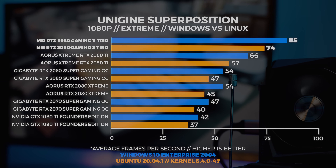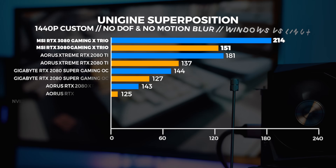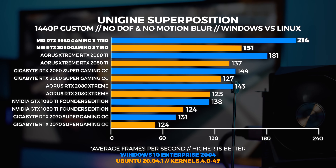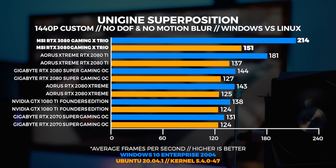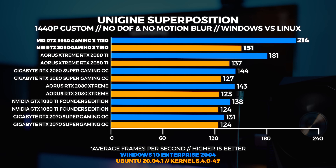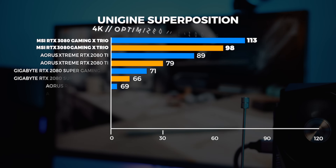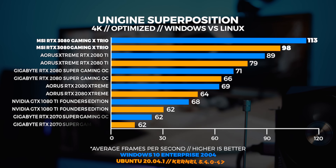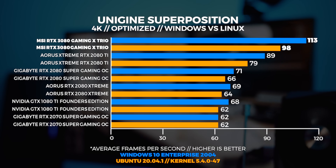When we start to compare the performance between Windows and Linux, we can see that the DX11 performance is a lot better than when it's in OpenGL on Linux, but to be honest that's not something we don't already know — so nothing really surprising with this benchmark.